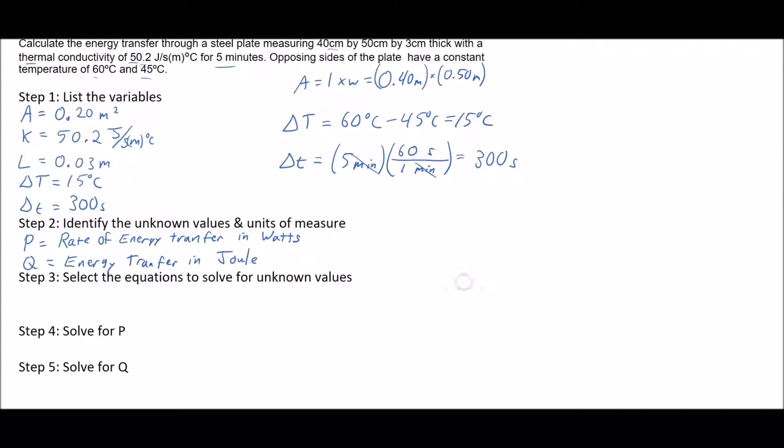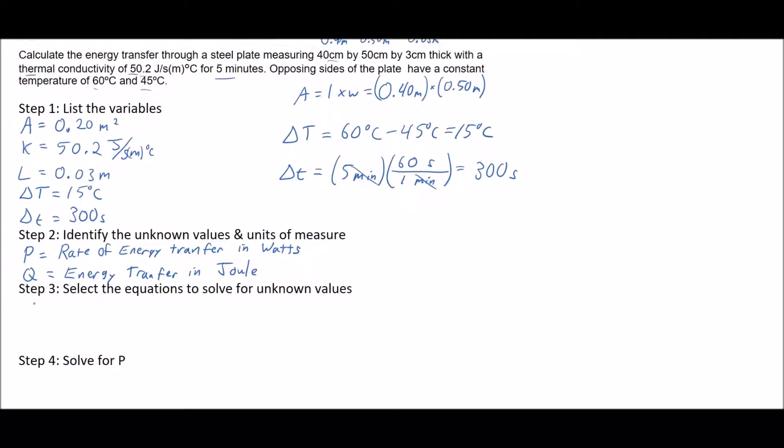Now we want to select the equations to solve for the unknown variables. Given the variables we have, capital P, the rate of energy transfer, equals k times area times delta T for temperature divided by capital L thickness. The other one we're going to use is capital P equals Q divided by lowercase delta t time.